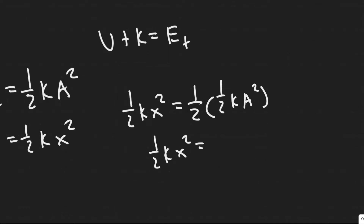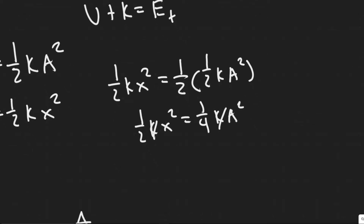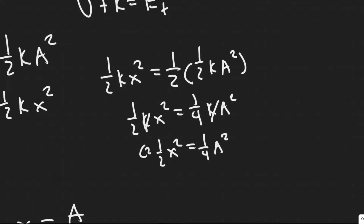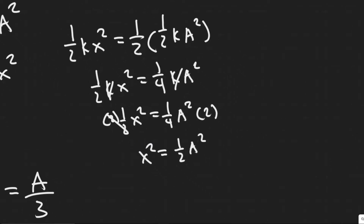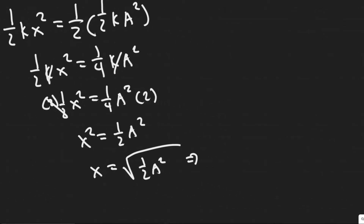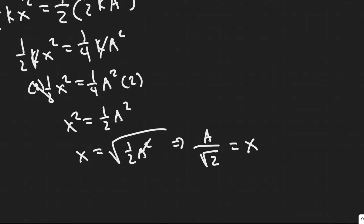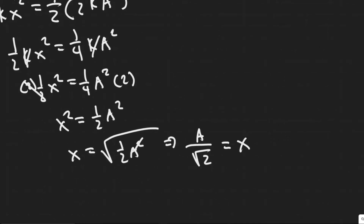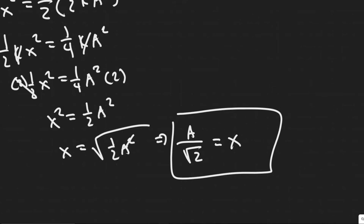So we have one-half kx squared equals one-quarter kA squared. Obviously k appears on both sides, so we can cancel it. Then we have one-half x squared equals one-quarter A squared. Multiply both sides by two to get x squared equals one-half A squared. Then square root both sides: x equals the square root of one-half A squared, which is better written as A over the square root of two. So the displacement at which half the energy is kinetic and half is potential is A divided by the square root of two. That's your answer to part A.